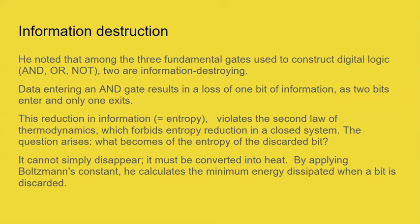Landauer noted that if we build our computers of AND, OR, and NOT gates, two of those gates — OR and AND — are information-destroying. There are two inputs to an AND gate and one output. This reduces the amount of information every time you go through an AND gate. And since information is equal to entropy, it would appear to be a violation of the second law of thermodynamics, which says you can't reduce the entropy of a closed system. What becomes of the entropy of the discarded bit? You start with two bits of information, end up with one. One bit of information has disappeared — it can't simply vanish, so it must be converted into heat.